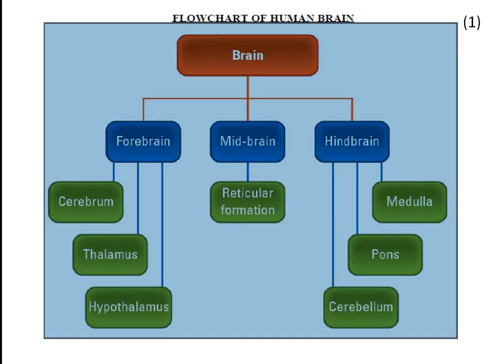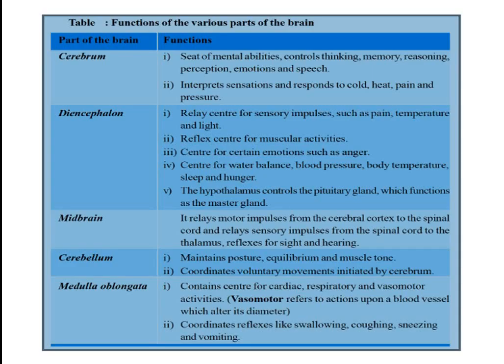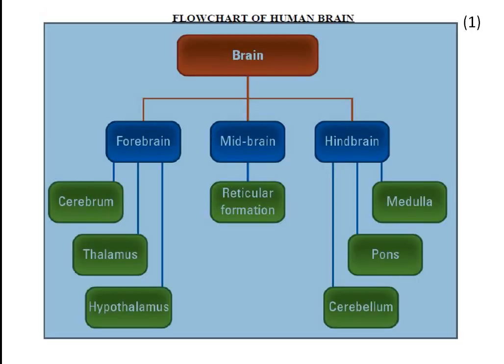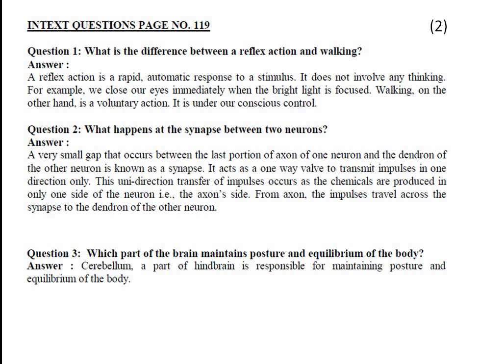This is a flow chart of the human brain. As a continuation of the table, you have to write this also — a flow chart of the human brain showing the main parts of the brain. By drawing this flow chart in your copy, at a glance you can understand, and in the time of examination it will be easy for you. These are the question answers of that portion we have learned in chapter 7. The answers to those 5 questions from your textbook page number 119 are given here; you have to write these as a continuation of chapter 7.